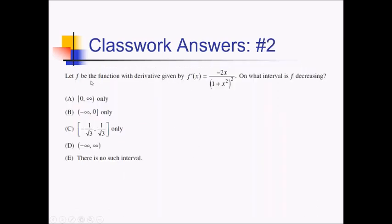For this problem, we have this function f with a derivative given by f'. We want to know on what intervals f is decreasing. This is one of those problems that looks a lot worse than it actually is. If you were thinking you needed the quotient rule, you actually already have f' here, so you don't need to take another derivative. We're just trying to find where f is decreasing, and we already know its derivative. Normally with a fraction like this, we'd worry about where the derivative is undefined, but this denominator is always going to be positive, so we don't have to worry about that.